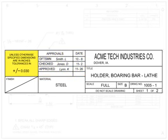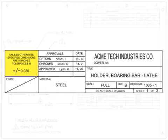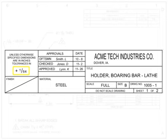Tolerances are defined as the difference between the lowest and highest acceptable limits of a dimension. It is almost impossible to machine parts to the exact dimension called out on the drawing. Tolerances allow a machinist to deviate within a specified limit that will not adversely affect the final part. The tolerances block contains the default tolerances for dimensional callouts where no tolerance is otherwise noted, and should be followed unless specifically marked otherwise. Examples of tolerances are plus or minus 0.030 or plus 1/64th of an inch.